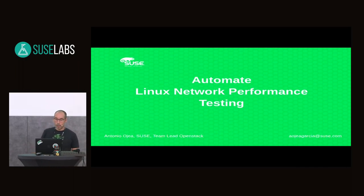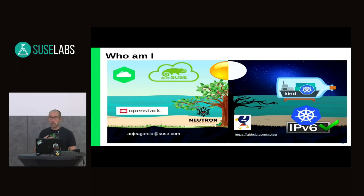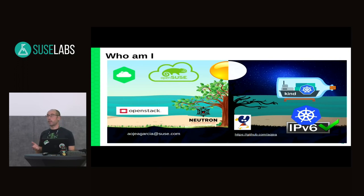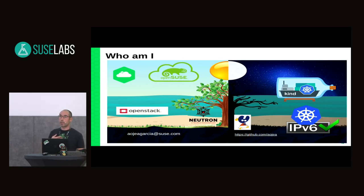I'm going to talk about automation of Linux network performance testing, but not from a current perspective — more from a network engineering perspective. I'm working as a team lead in the OpenStack Cloud team during the day, and at night as a developer in Kubernetes in the project Kine. Right now I'm heavily working on graduating IPv6 support in Kubernetes to beta.